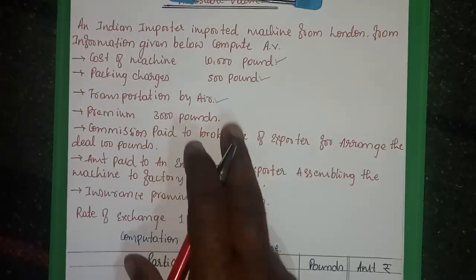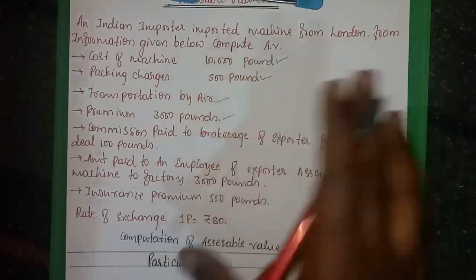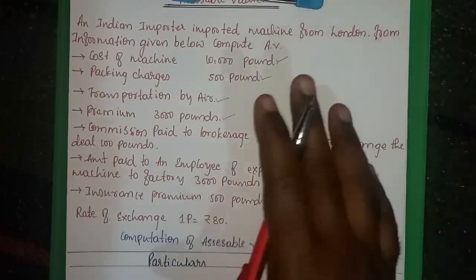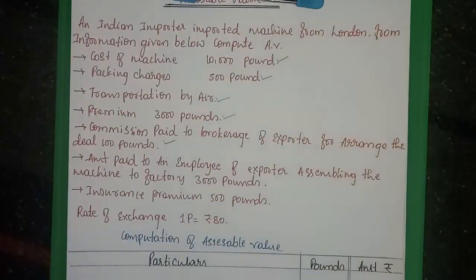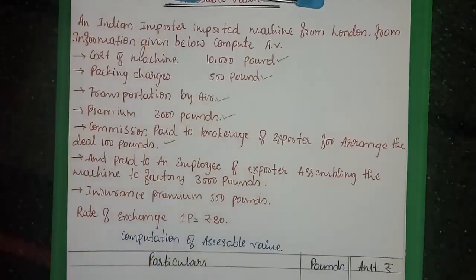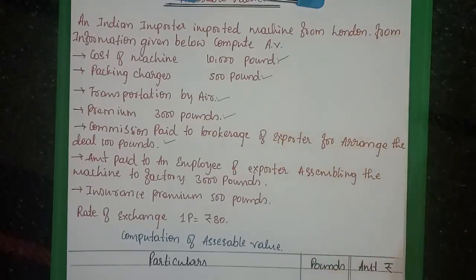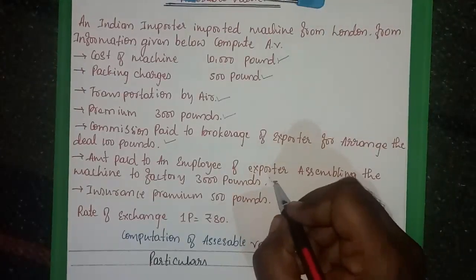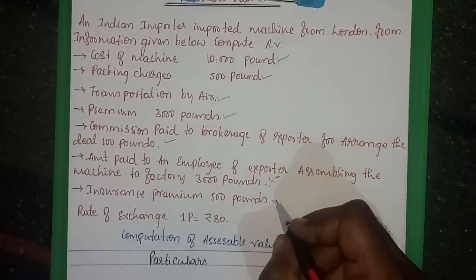Insurance premium bond is 3,000 pounds. Commission paid to brokerage of exporter for arranging the deal — this is a buying commission, also called dealing commission — is to be considered. The amount paid to an employee of the exporter for assembly in the machine at factory, i.e., delivery at the factory, is also considered.